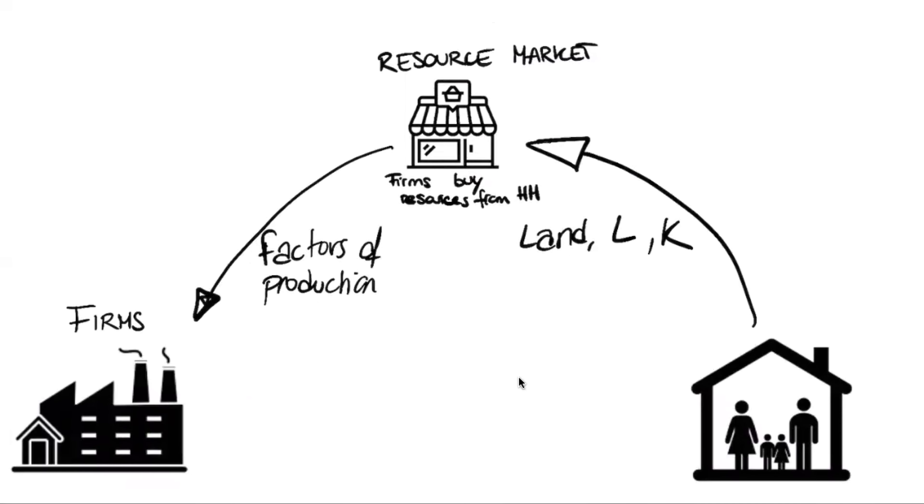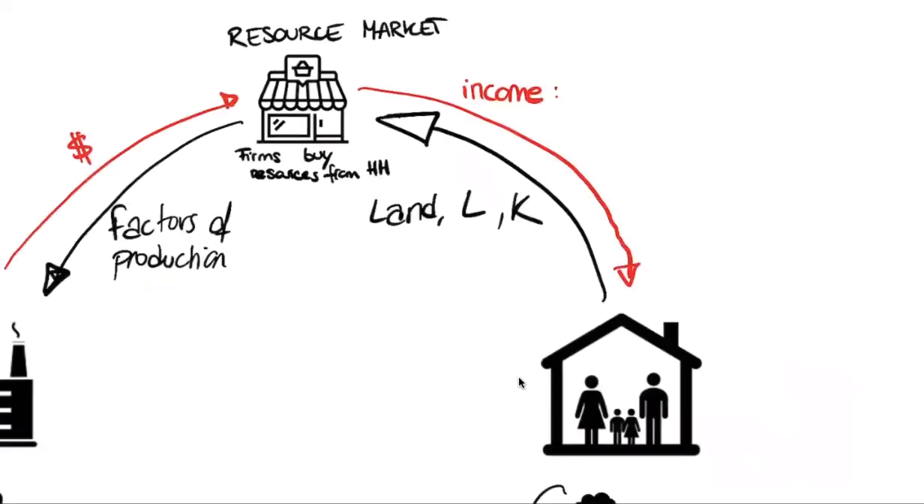Now, how do they buy them? Obviously, they use money. And I'm going to use a red arrow this time. So basically, in red is the flow of money. In black is the flow of resources. And so firms, they spend money. The households, they receive an income. Now, this income is wage for the labor, it is rent for the land, and it is interest or dividend for the capital. But that's our first part here.